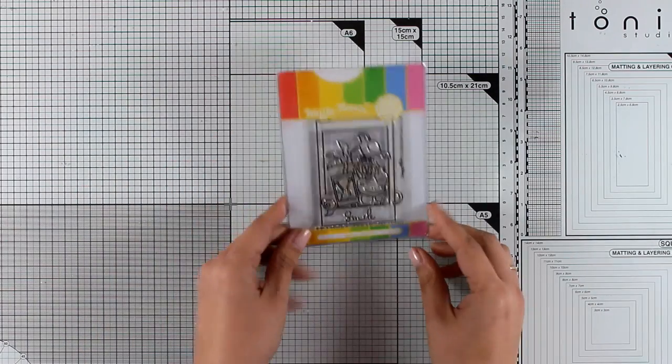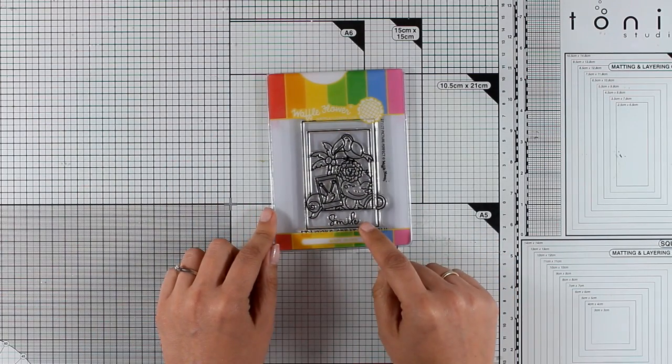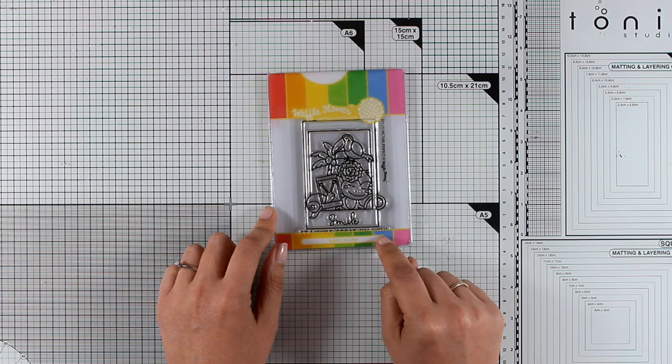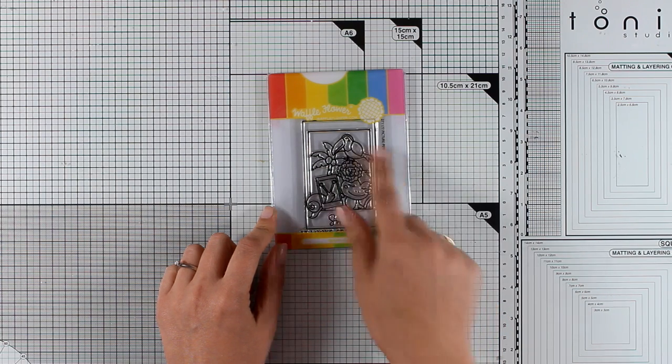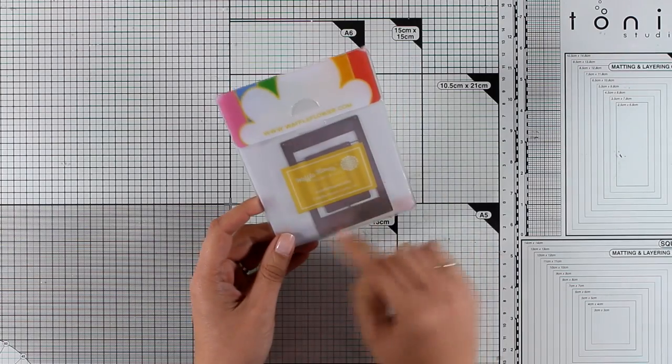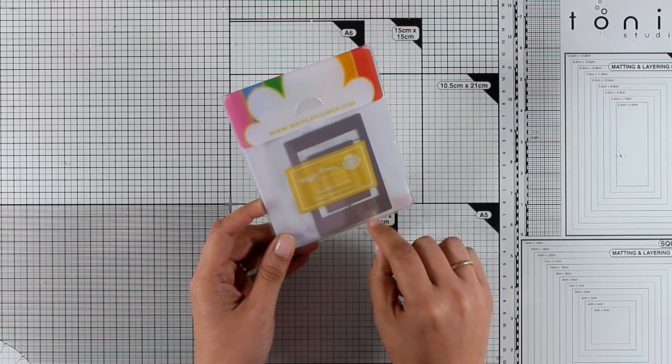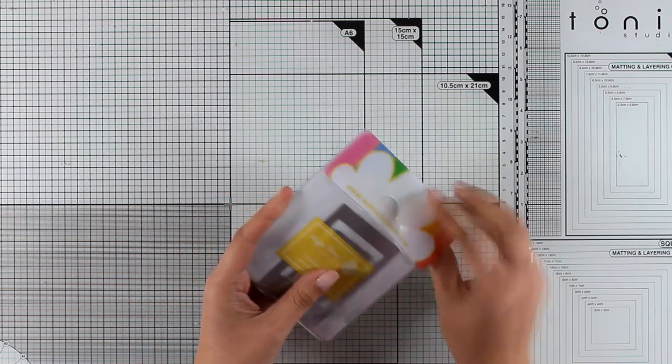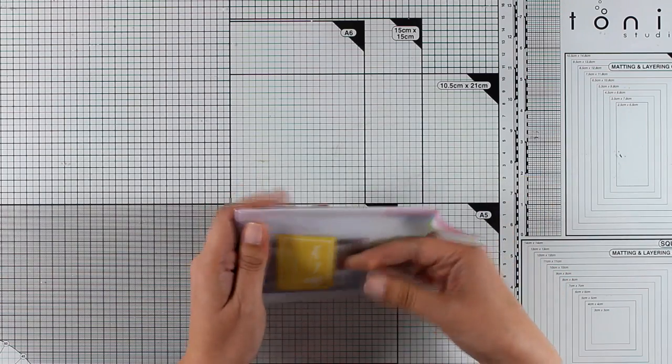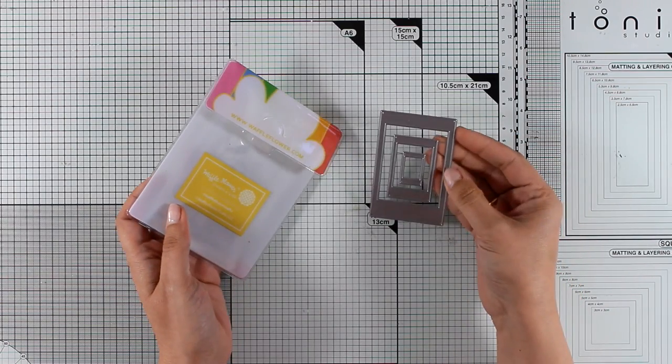Now let's move on to the smallest stamp set for this release. This is a three by four stamp set called Picture Perfect. You get the adorable monkey in an Insta photo as well as a toucan and a little snail. If you get the combo, you'll also get the dies to cut out this adorable image.